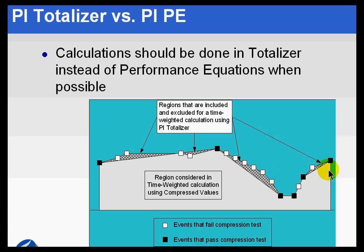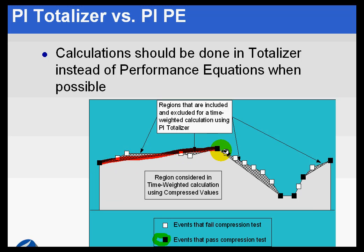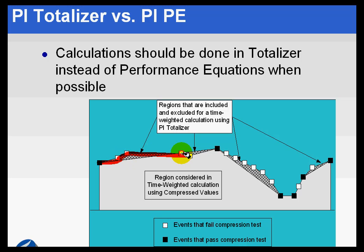Here's a slide that illustrates what we mean when we say the Totalizer is slightly more accurate than Performance Equations. If you look at these events — either white or black — they represent all of the snapshot values. The black values represent simply the archive values stored in the archive. When we do a calculation in Performance Equations, we're taking the area underneath the trend going from one black value to the next. When we use the Totalizer, we're going between the white values, which makes it slightly more accurate because we're looking at data at slightly higher resolution.